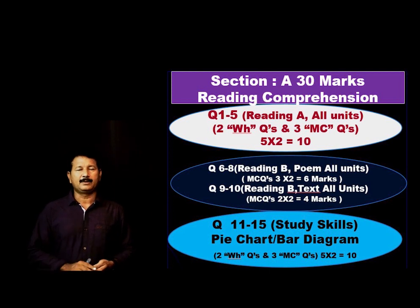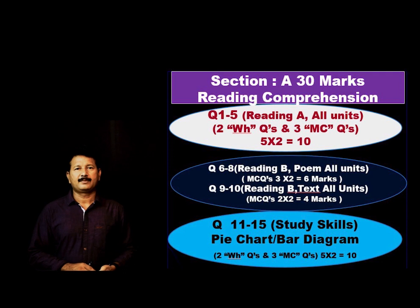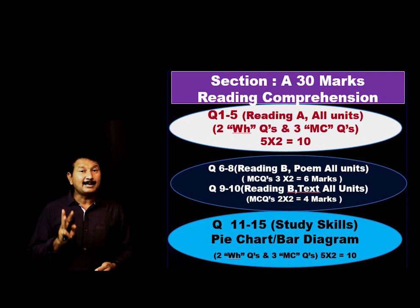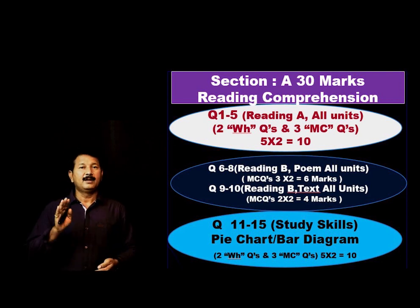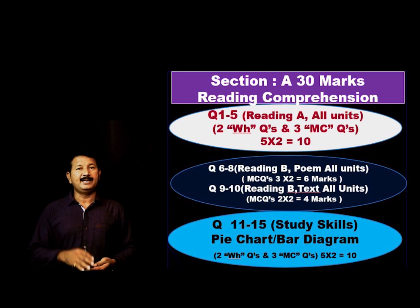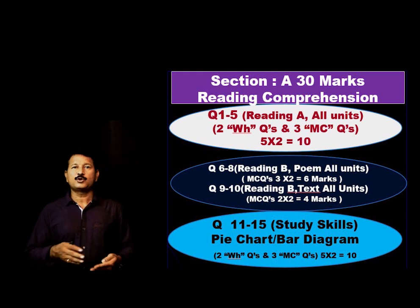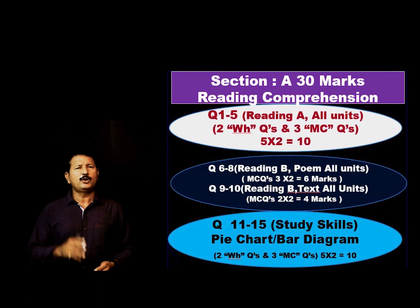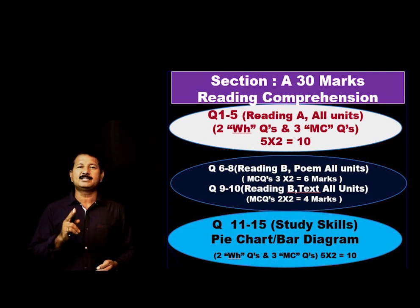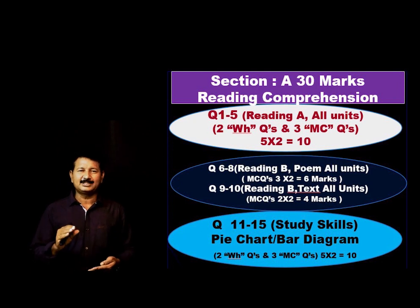Question number six to eight is Reading B — only poems. Three multiple choice questions, so three into two equals six marks. Question number nine and ten is reading comprehension B, part two. It covers 'Every success story is also a story of great failures' — unit-wise textual passages, only two marks each. Both these questions are MCQs only, so you need not worry. Just match the passage to the question keywords and you can do it better.